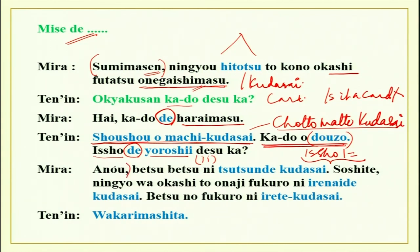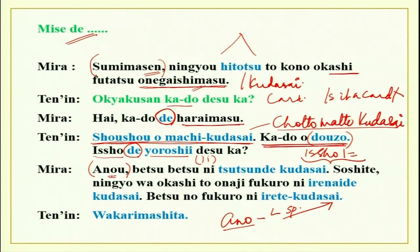Ano. This expression ano is very different from ano the demonstrative. Ano the demonstrative is pointing at something which is far from the listener and the speaker both. This ano — when you take time to think, when you want some time to think as to what to do now, when you are not sure of what you are going to say in a situation — that is when you will say ano.